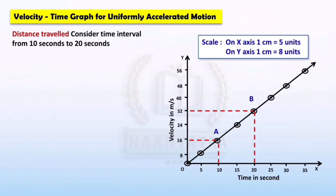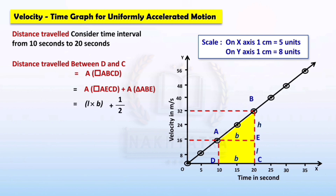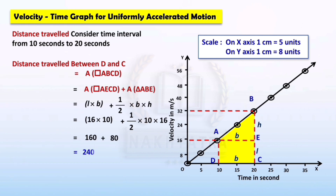Now find the distance traveled between time interval 10 seconds to 20 seconds. Distance traveled between D and C equals the area of ABCD, which equals the area of rectangle AECD plus the area of triangle ABE. Area of rectangle = length × breadth; area of triangle = ½ × base × height. Here AE is the base and BE is the height of the triangle. Putting in the values and calculating, the distance traveled between D and C equals 240 meters.